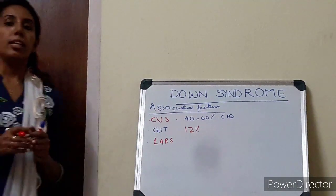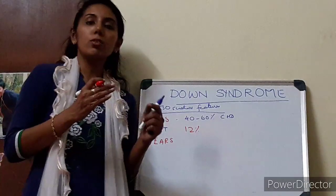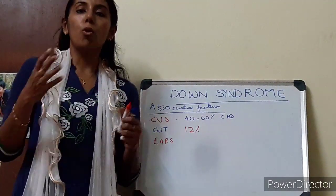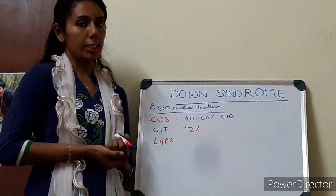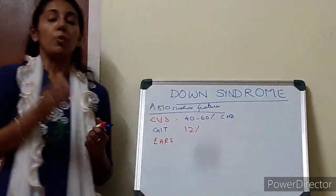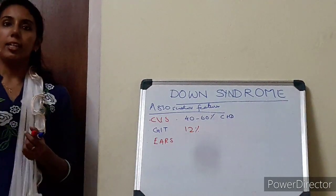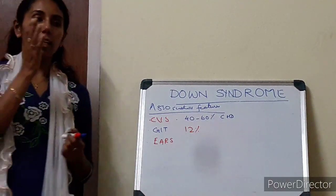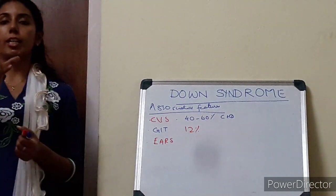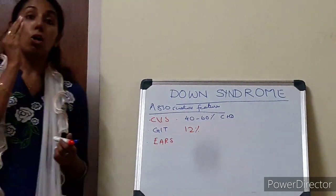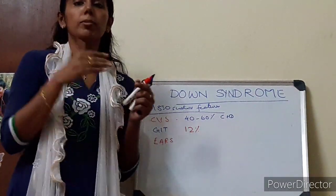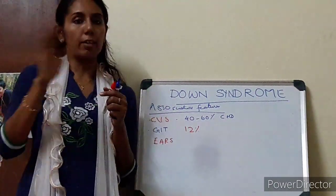It is found that Down syndrome children tend to have more risk for conductive hearing loss. So, evaluating the child — at the time of diagnosis, or at least in the first year at least two times, and annually thereafter — is important.